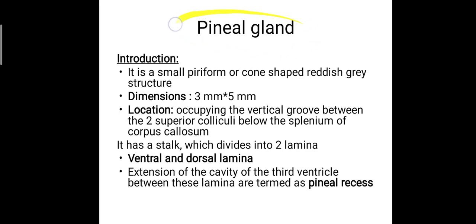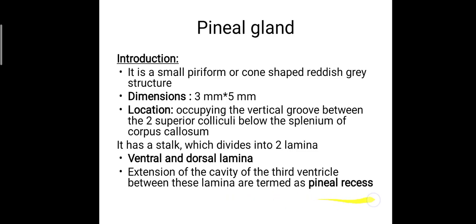The pineal gland is a small piriform or cone-shaped reddish-grey structure with dimensions of 3 mm to 5 mm. Its location is in the vertical groove between the two superior colliculi, below the splenium of the corpus callosum. It has a stalk which divides into two laminae — the ventral lamina and the dorsal lamina — while an extension of the cavity of the third ventricle between these laminae is termed the pineal recess.